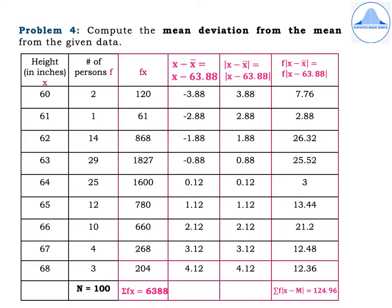Problem 4: compute the mean deviation from the mean from the given data. Height in inches: 60, 61, 62, 63, 64, 65, 66, 67, 68, and number of persons: 2, 1, 14, 29, 25, 12, 10, 4, 3. Since x values and frequencies are given, this is discrete data. Mark height as x, number of persons as f, and calculate N = Σf = 100. For mean deviation from the mean, compute the mean for discrete data: x̄ = Σfx / N. Form column fx: 120, 61, 868, 1827, 1600, 780, 660, 268, 204; Σfx = 6388.